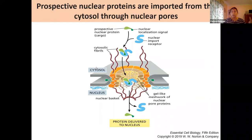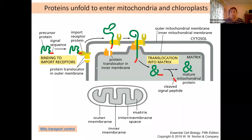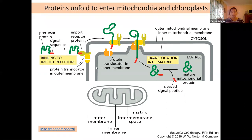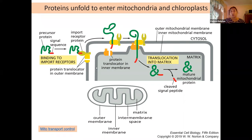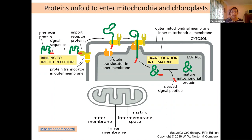Just like you had a nuclear import receptor, you have an import receptor for mitochondria or for chloroplast as well. Now these proteins are different than the ones we read about earlier in the nucleus. The nuclear import protein was hanging out in the cytosol running through GTP hydrolysis. In this case, they are actually receptors on the surface — on the outer mitochondrial membrane or outer chloroplast membrane.